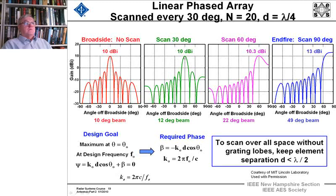We get a beam broadening from 10 degree beam to a 12 degree beam, and then the beam width is 22 degrees at 60 degree scan angle, and we're at end-fire when we're 90 degrees off, and the beam width is 49 degrees.